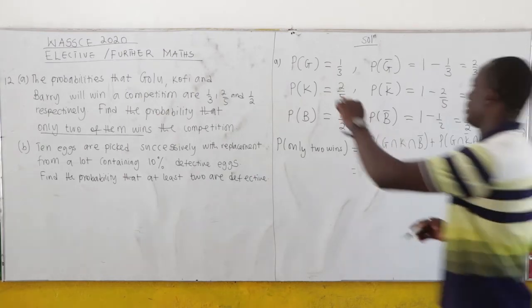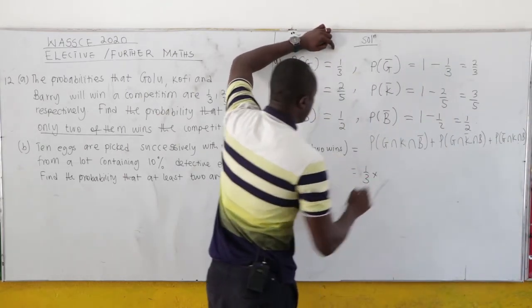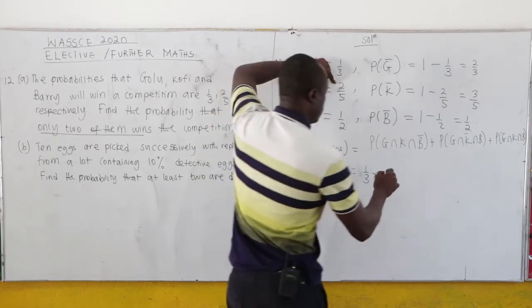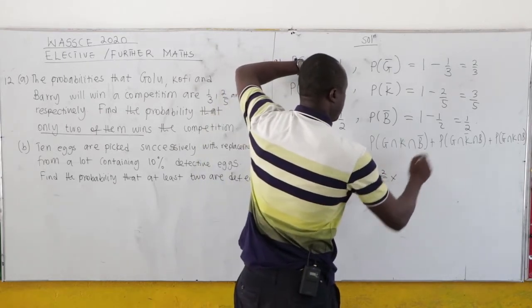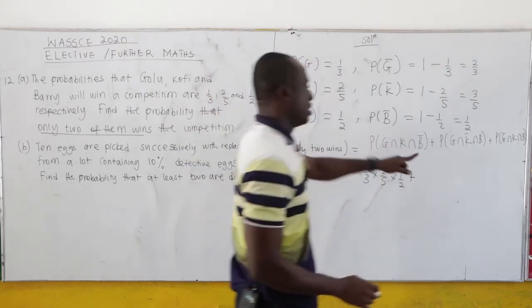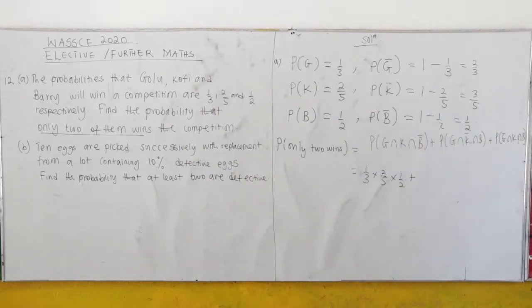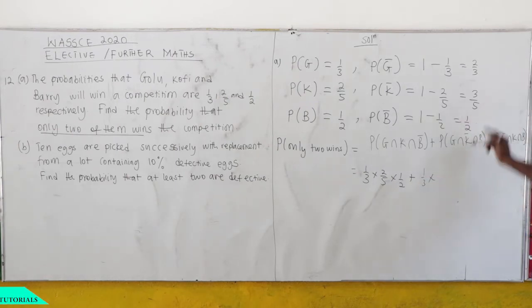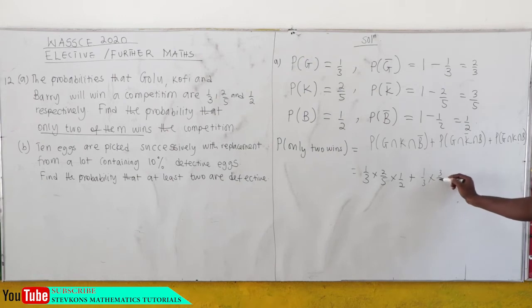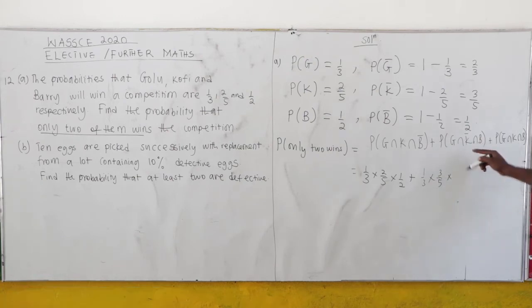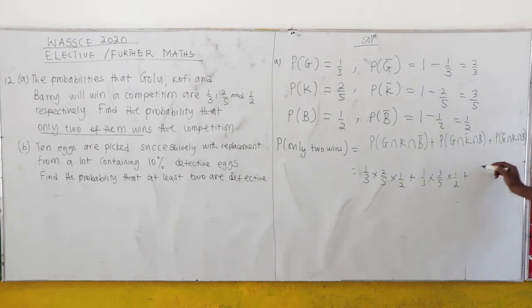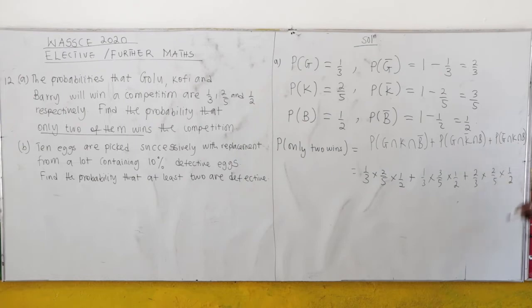So from the first case: Golu wins (1 over 3), Kofi wins (2 over 5), and Barry does not win (1 over 2). Second case: Golu wins (1 over 3), Kofi does not win (3 over 5), and Barry wins (1 over 2). Third case: Golu does not win (2 over 3), Kofi wins (2 over 5), and Barry wins (1 over 2).